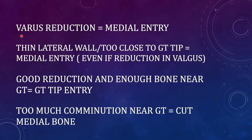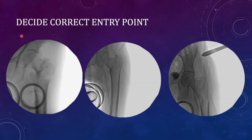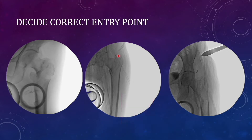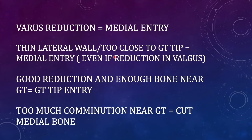Medial entry means making an entry just medial to the trochanteric tip — not deep into the piriformis fossa. Having bone lateral to your entry point will not allow compression at the fracture site, and the fracture will have a tendency to go into varus. In any fracture with the fracture line close to the trochanteric tip, go for medial entry just medial to the tip. If you have good reduction with enough intact bone near the trochanteric area, then you can go for conventional greater trochanteric tip entry.